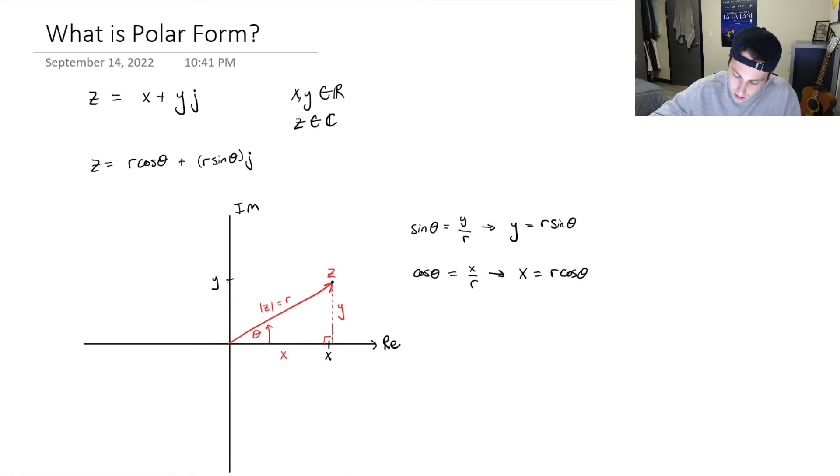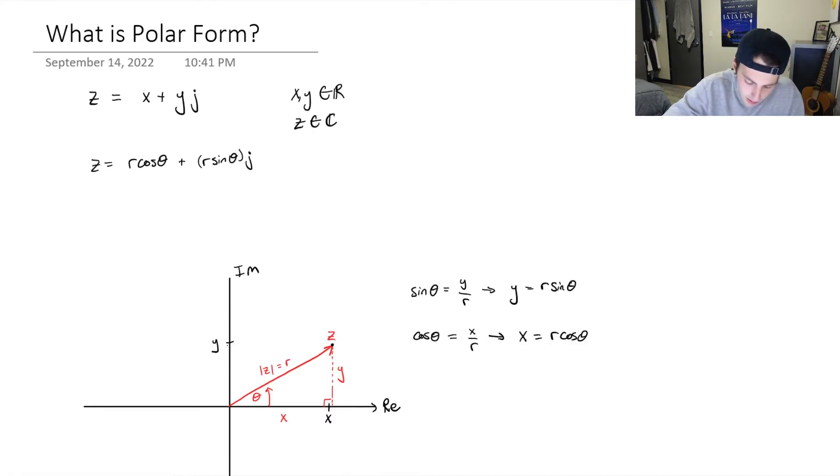Factor out the r, and then we're left with r times all of cos theta plus... We'll rearrange this as j times sine theta.